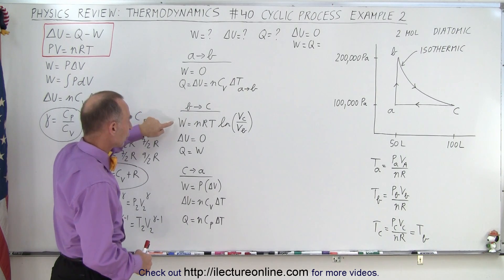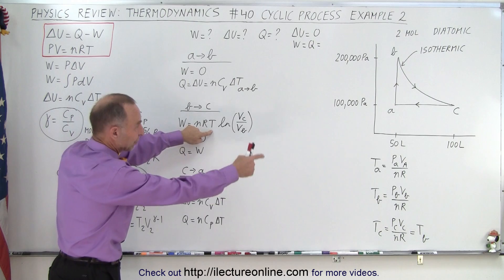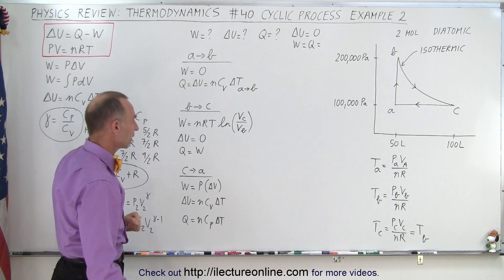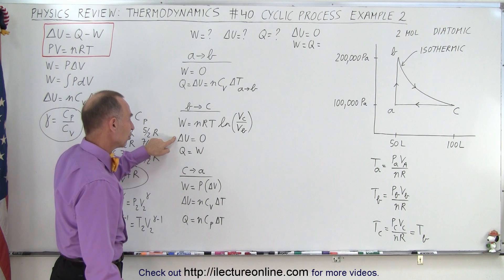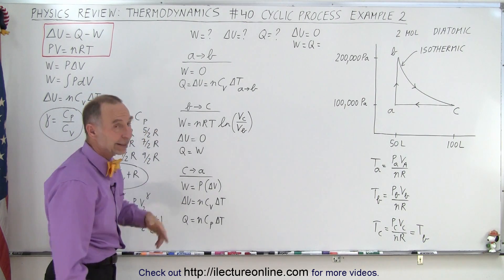Going from B to C, we have the equation for work done, and so we need to know the temperature, which we get from there, and we need to know the final initial volumes which were given. The change in internal energy will be zero, and the heat added to the gas will equal the work done by the gas.